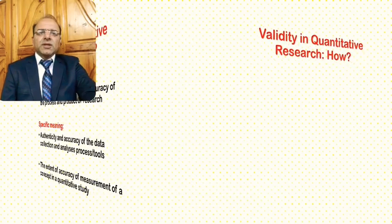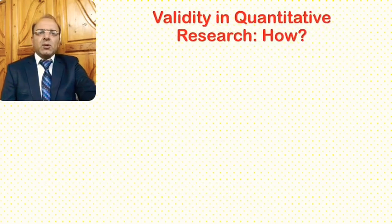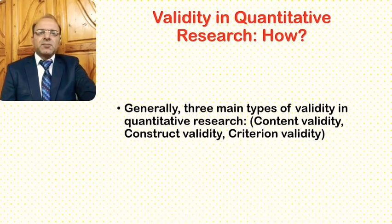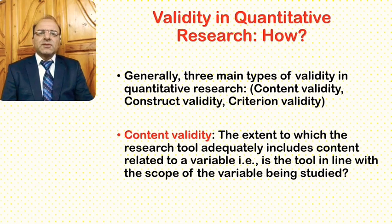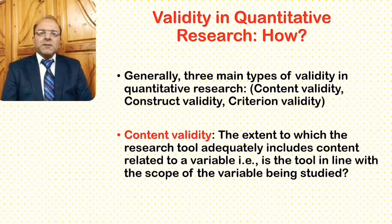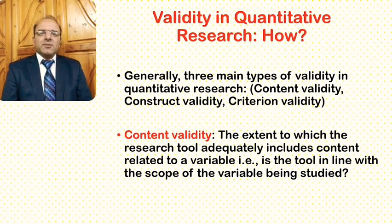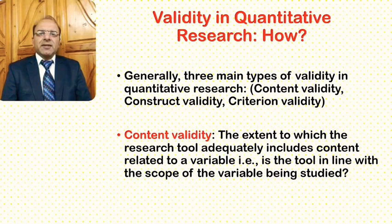Now we move on to the how question, and here we will also discuss the main types of validity in quantitative research studies. Generally, there are three types of validity in quantitative research. They are content validity, construct validity, and criterion validity.